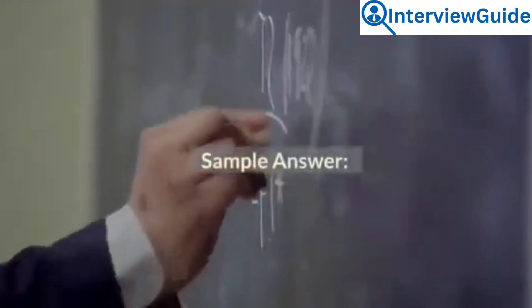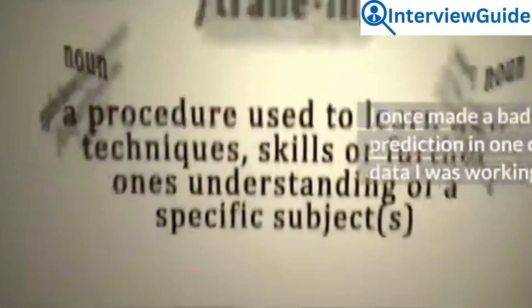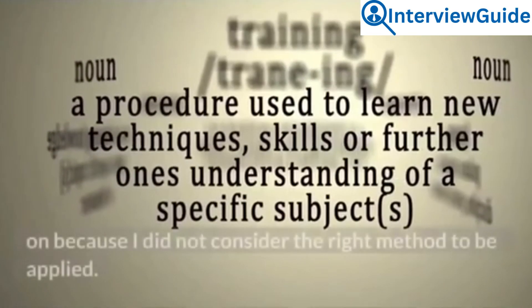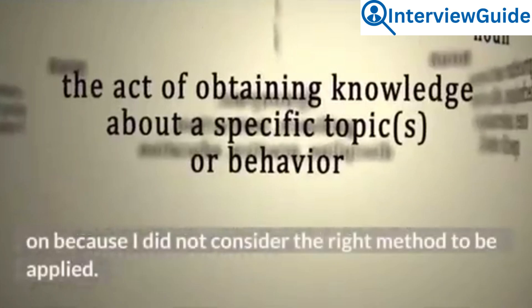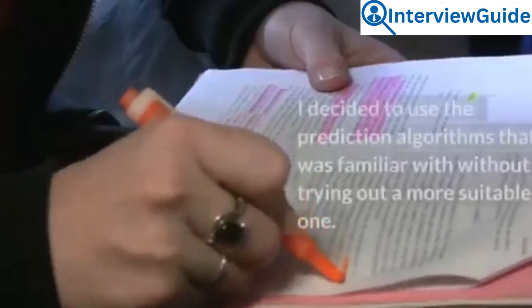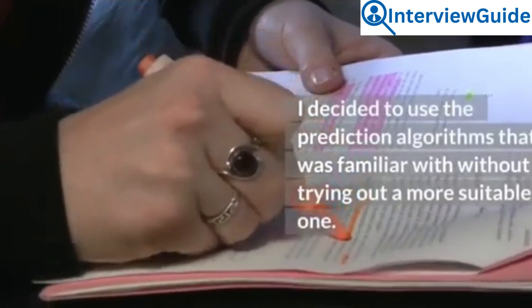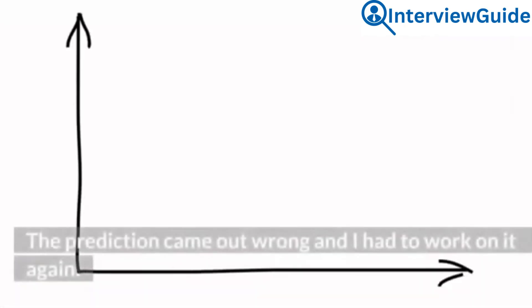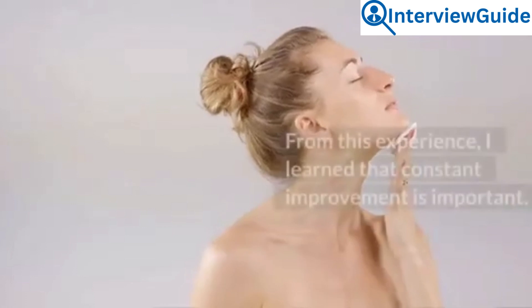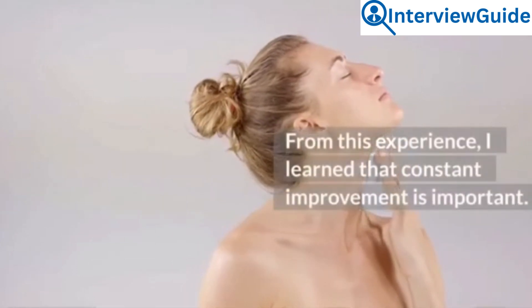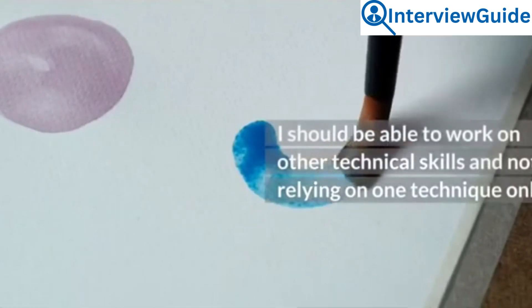Sample Answer: I once made a bad prediction in one of the data I was working on because I did not consider the right method to be applied. I decided to use the prediction algorithms that I was familiar with without trying out a more suitable one. The prediction came out wrong and I had to work on it again. From this experience, I learned that constant improvement is important. I should be able to work on other technical skills and not relying on one technique only.